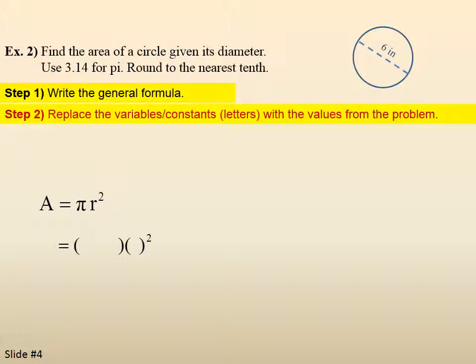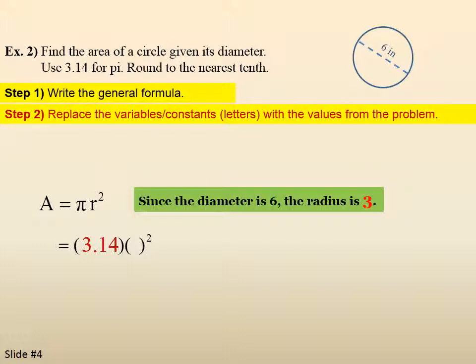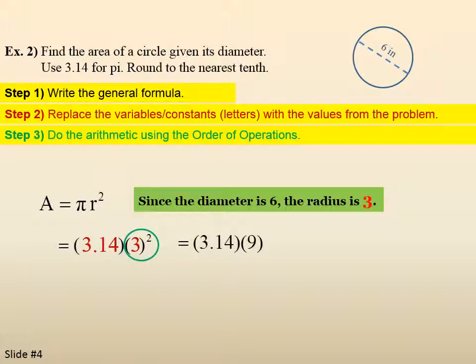Step 2, replace the variables constants with the values from the problem. Pi we're told to use is 3.14. And the radius, we weren't given the radius. But because we were given the diameter, which is 6, we know the relationship between the radius and the diameter, so the radius is 3. The formula calls for the radius, so that's what we put in, 3. Then we do the arithmetic using the order of operations. 3 squared is 9, so 3.14 times 9, which gives us 28.26.